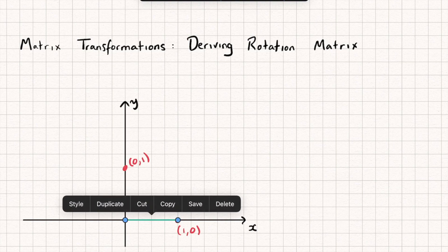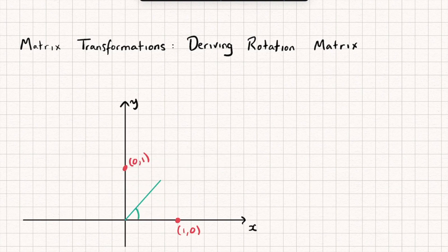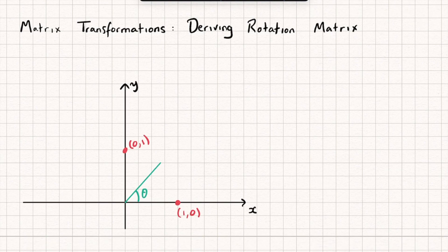Let's see what happens to the point (1, 0) as I rotate it around by some given angle theta. As I rotate it, its distance from the origin remains fixed at a length of one. So rotating by a generic angle theta, if I drop a perpendicular here I've constructed a right angle triangle, and if I can find the coordinates of this rotated point, that gives me the first column of my transformation matrix.